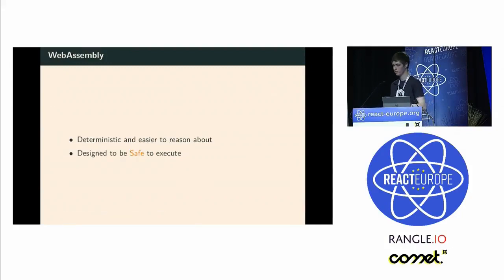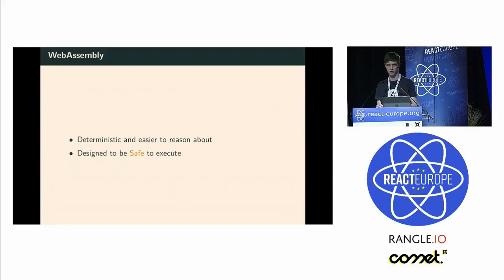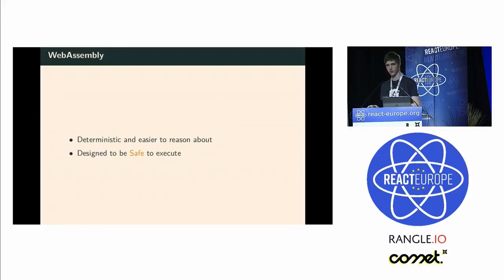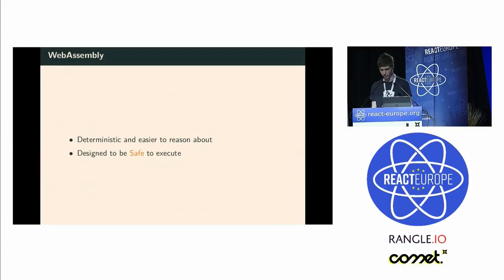WebAssembly is known to be deterministic and easy to reason about, which means that when you look at a piece of WebAssembly code, you are able to tell the output of the program — whereas in JavaScript, even a simple addition can trigger many side effects, so it's not really possible to infer the output.